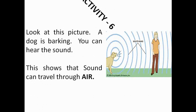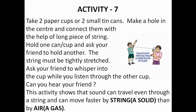This is Activity 6. Look at this picture — a dog is barking and you can hear the sound. This shows that sound can travel through air. Activity 7: Take two paper cups or two small tin cans. Make a hole in the center and connect them with a long piece of string as shown in the figure. Hold one cup and ask your friend to hold the other, with the string tightly stretched. Ask your friend to whisper into the cup while you listen through the other cup. You will hear your friend. This activity shows that sound can travel even through a string — a solid — faster than through air or gas.